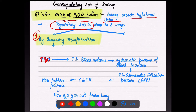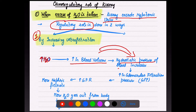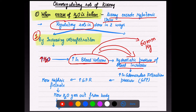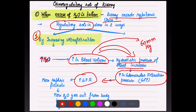Suppose an increased amount of water is taken in — blood volume will also increase. When blood reaches the glomerulus, the hydrostatic pressure of blood will also increase. That glomerular filtration pressure (GFP), which we discussed as 60 mmHg, will now be more than 60. If GFP increases, the glomerular filtration rate also increases.